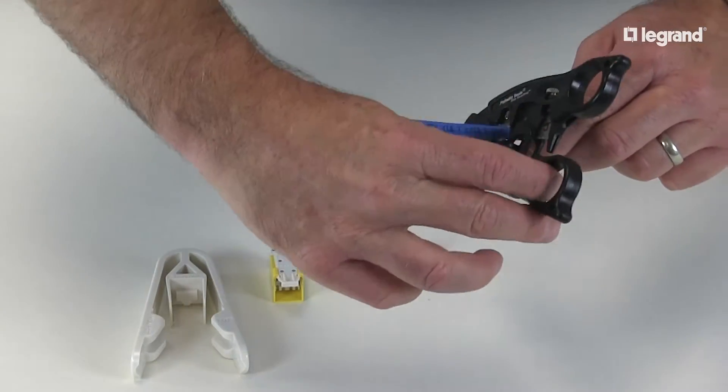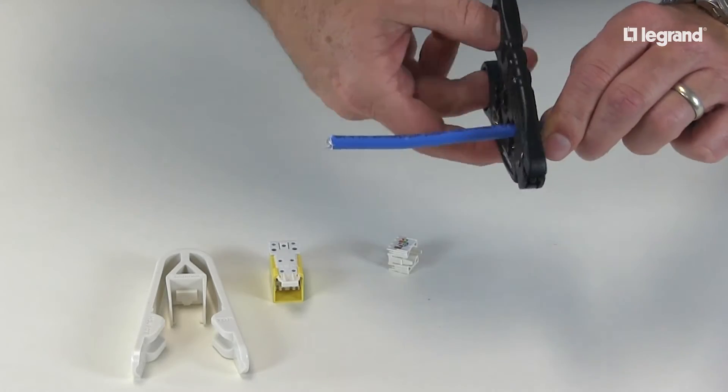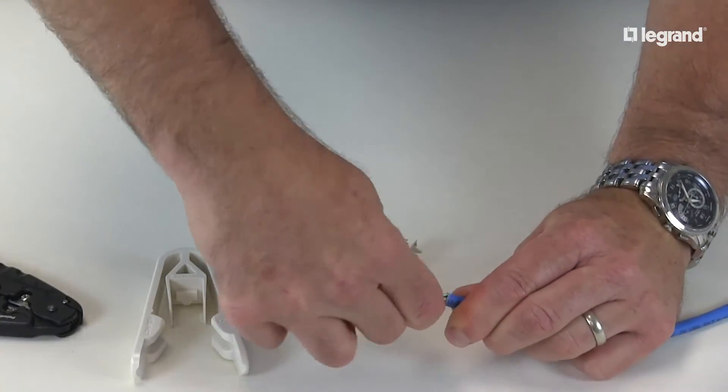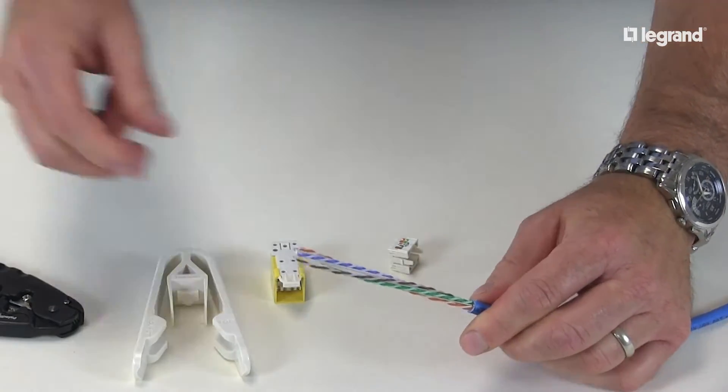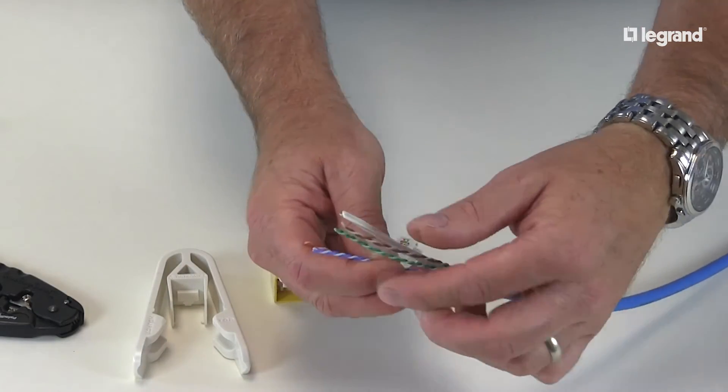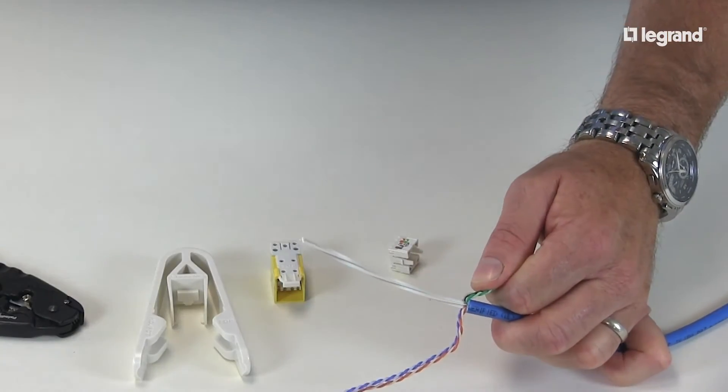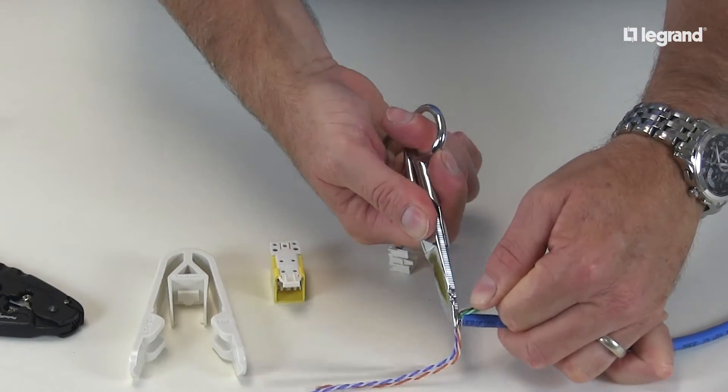The first thing we need to do to get started is to strip the jacket off our cable using the cable stripper. You're going to want to strip about an inch and a quarter to two inches off the jacket. Then spread your pairs back. This will expose any spline that may be in the cable. Trim any spline so that it's flush with the end of the cable's jacket.